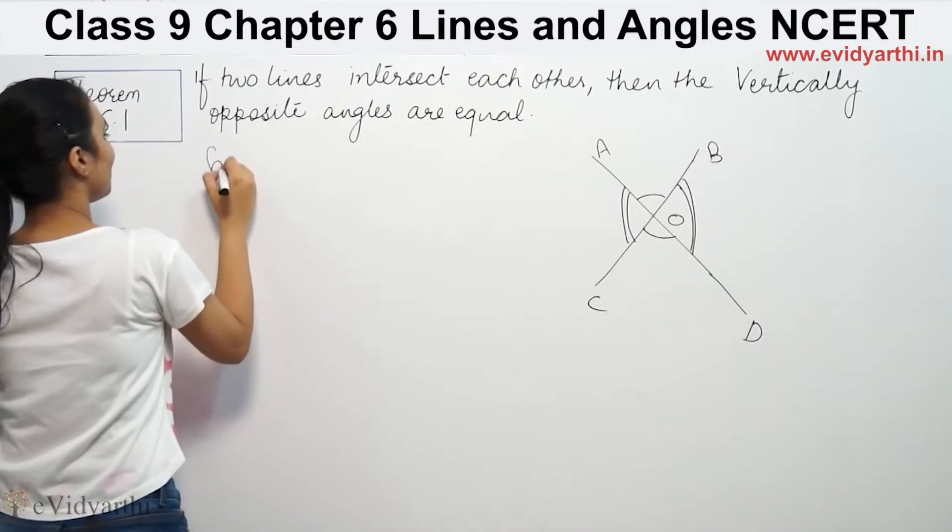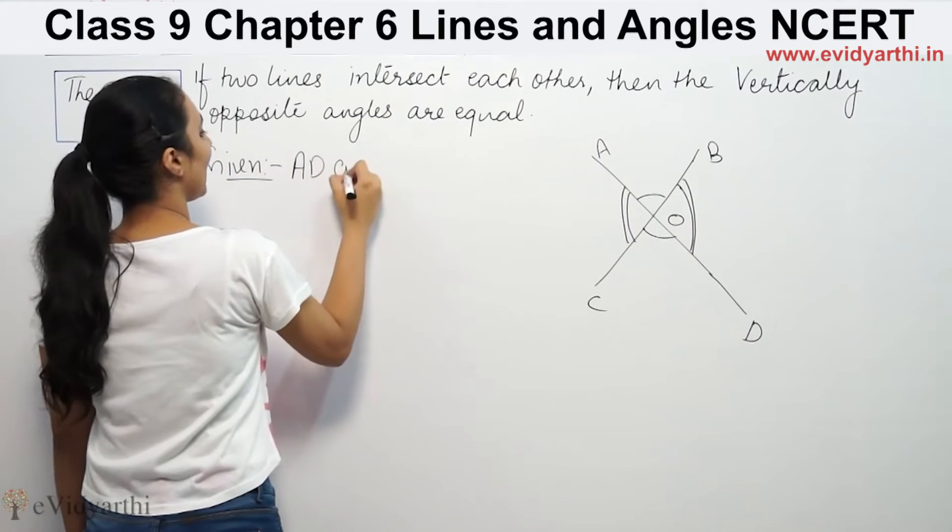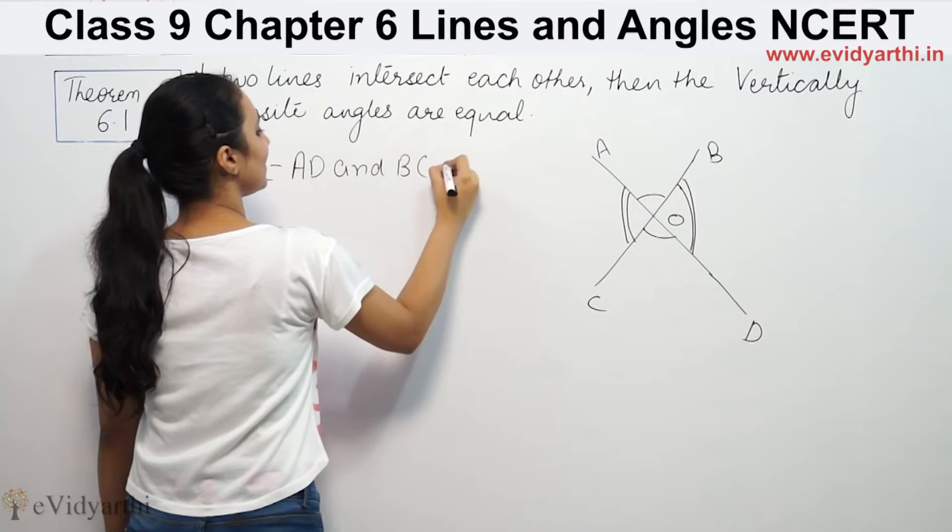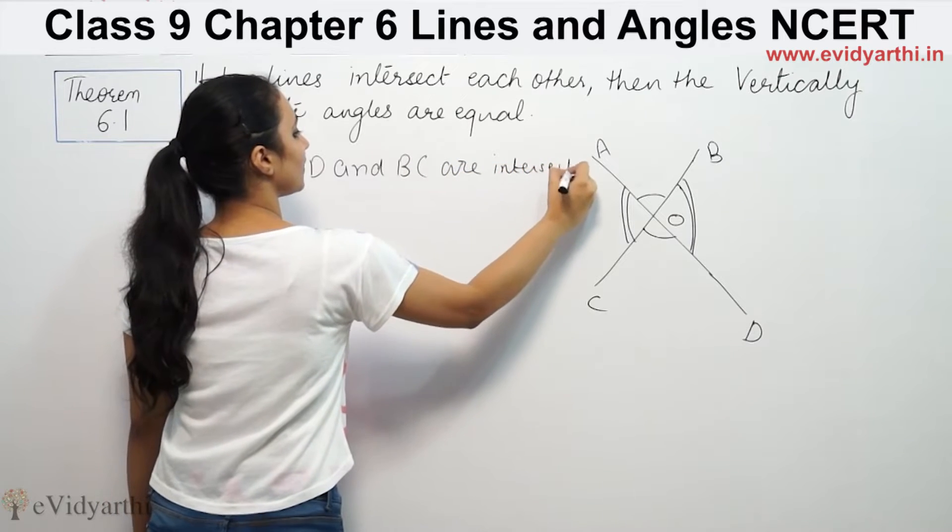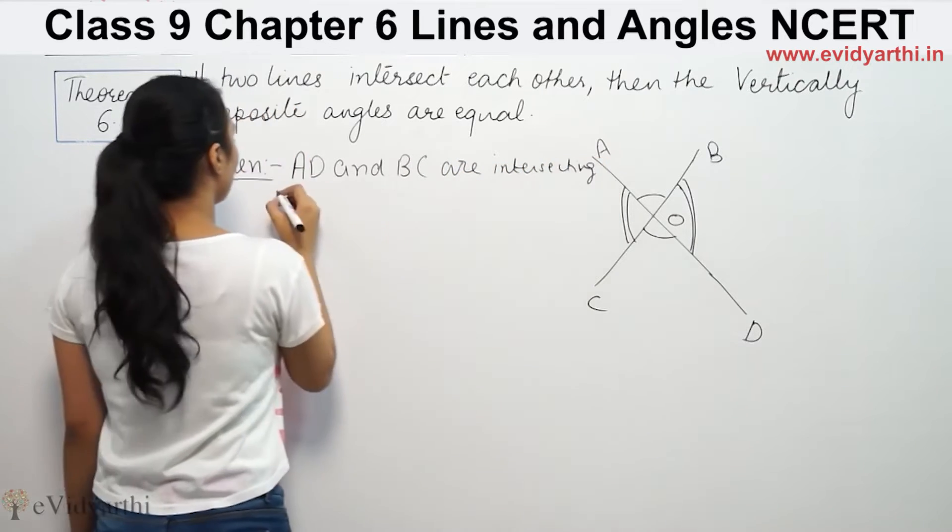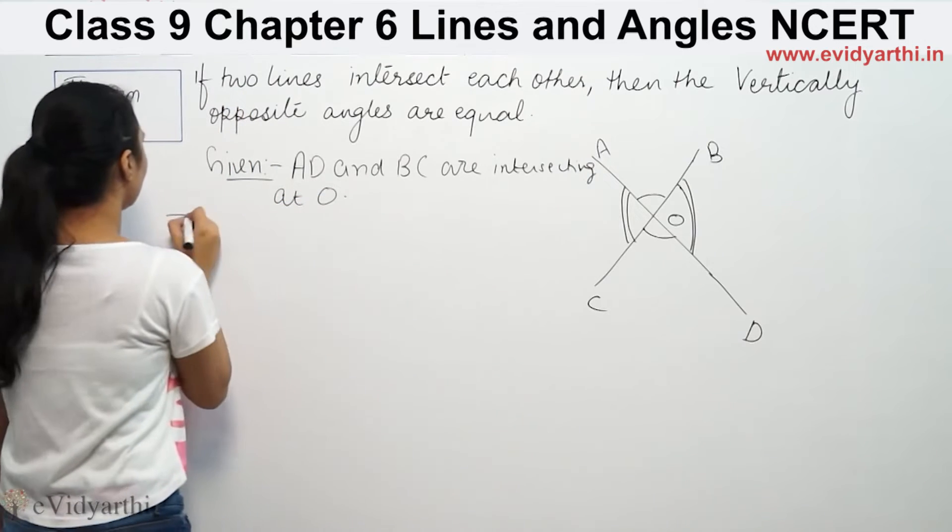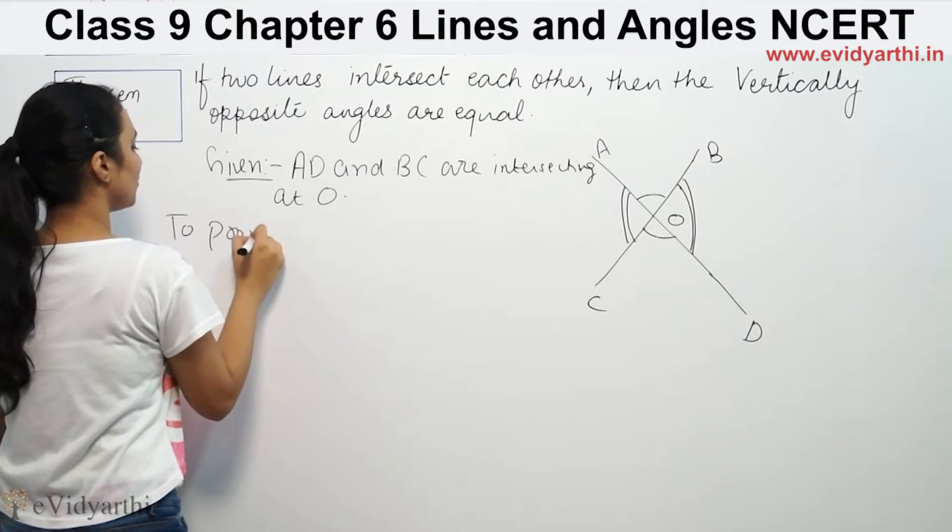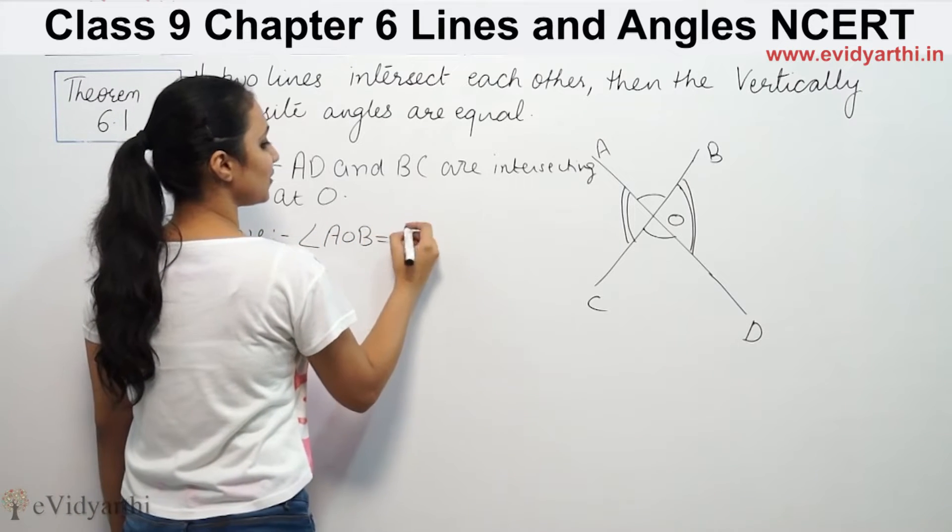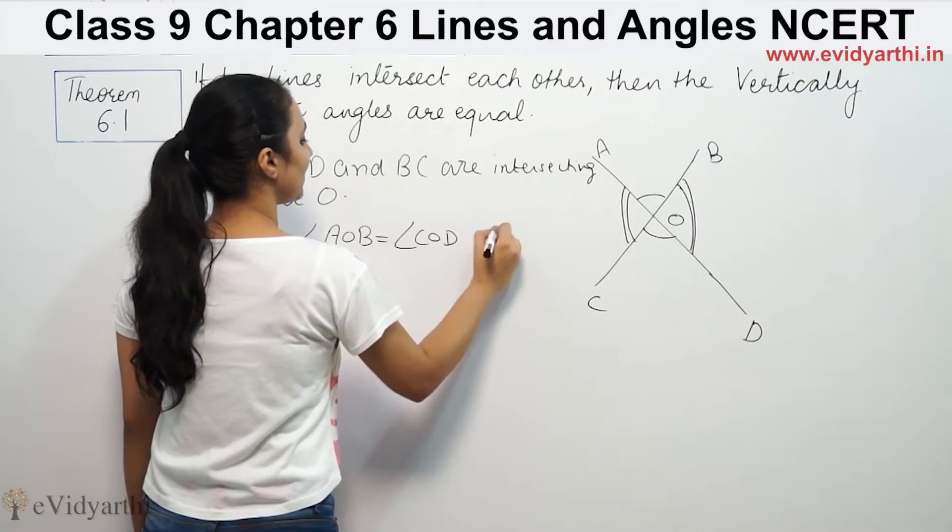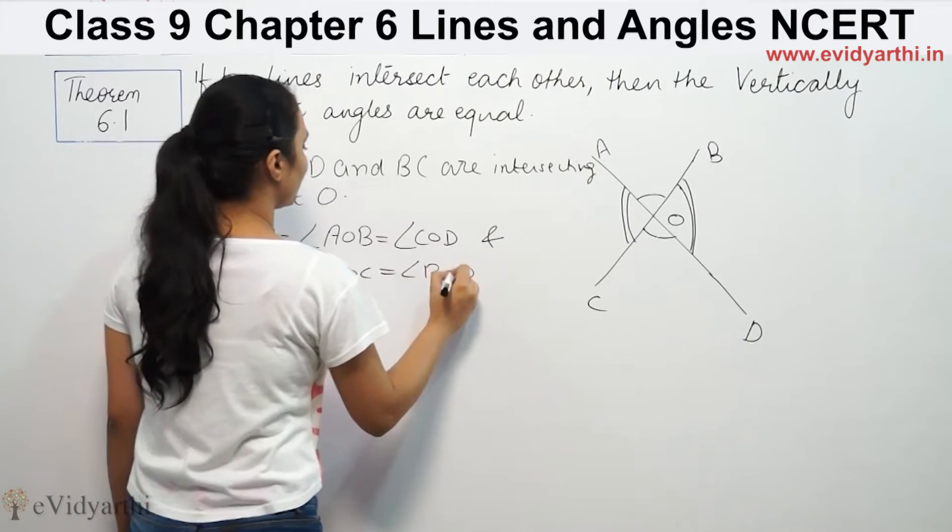Given: AB and BC intersect at O. To prove: angle AOB equals angle COD, and angle AOC equals angle BOD.